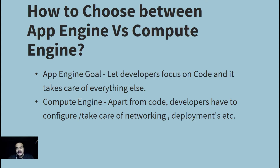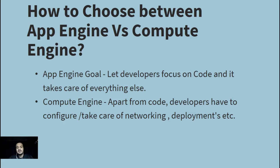In simple words, App Engine's goal is to let developers focus on code and it takes care of everything else. With Compute Engine, apart from the code, developers also have to configure and manage everything else — networking, deployments, etc. That is the basic difference between Compute Engine and App Engine.